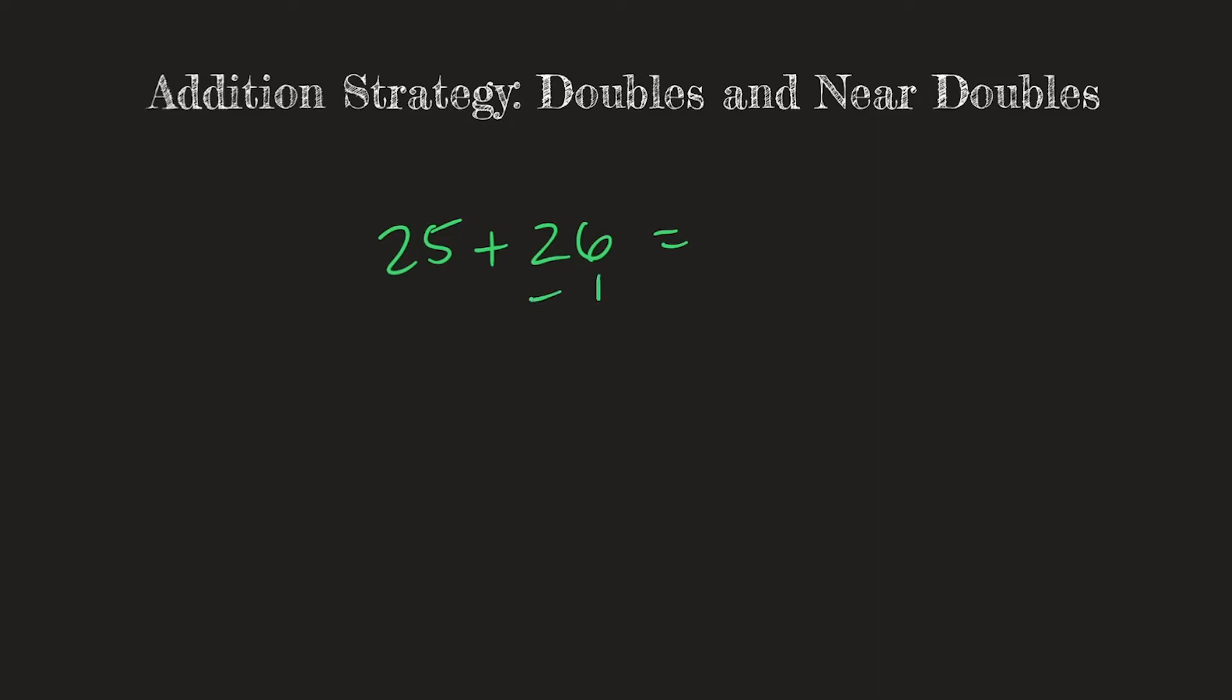I know that if I take away 1 from 26, I get 25. And now 25 plus 25 is super easy to solve. I know off the top of my head that that's 50. But here's the thing.